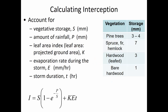One empirical formula in your book allows you to estimate interception. You start with a storage quantity S depending on tree species, then look at the total amount of rainfall — not intensity, but overall amount. You find interception by accounting for the difference between precipitation and storage, also accounting for evaporation during the storm event. This formula calculates maximum interception, assuming there's enough time during the storm for evaporation to occur.